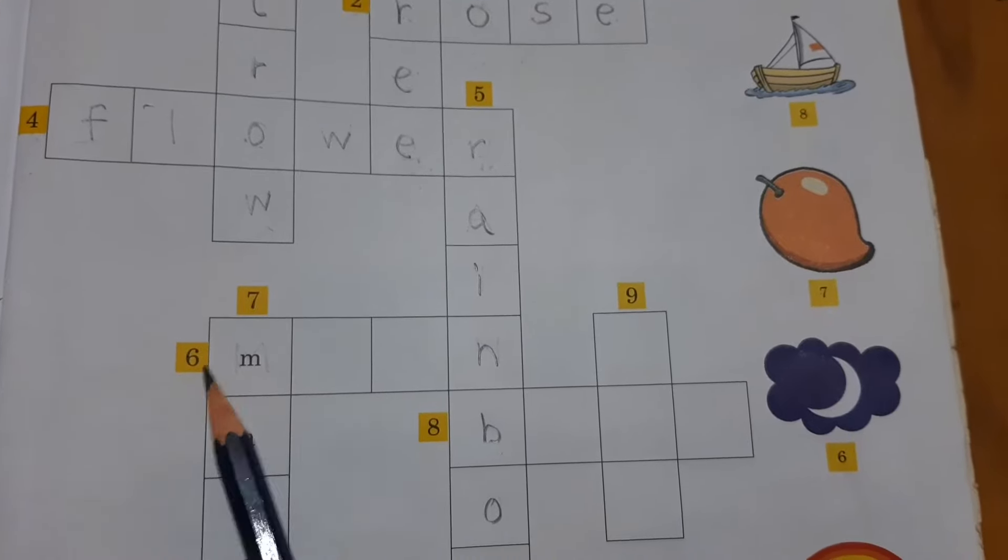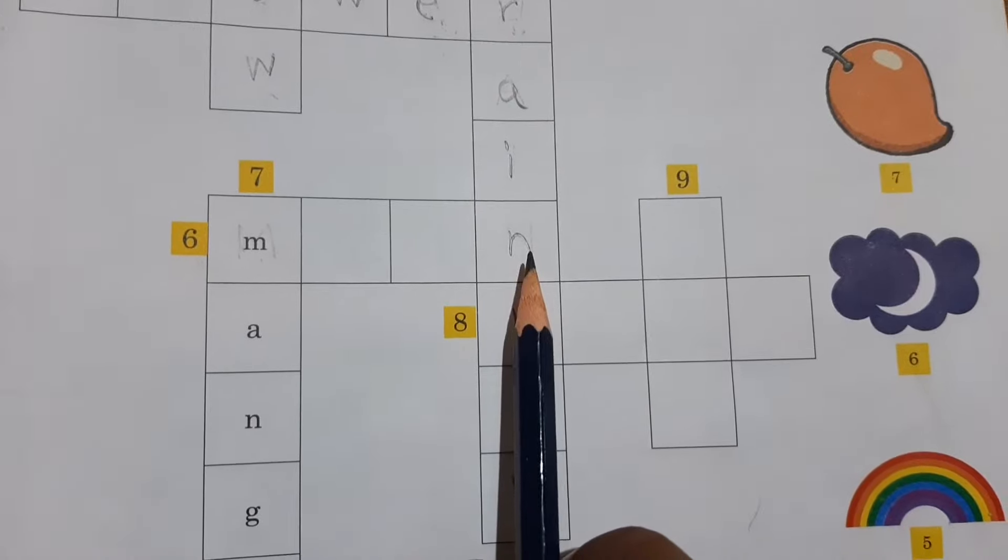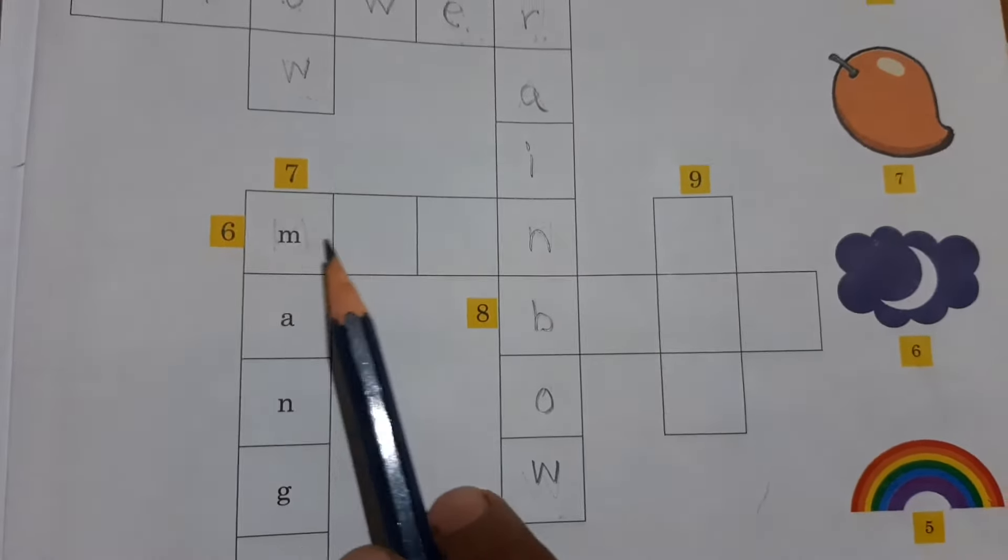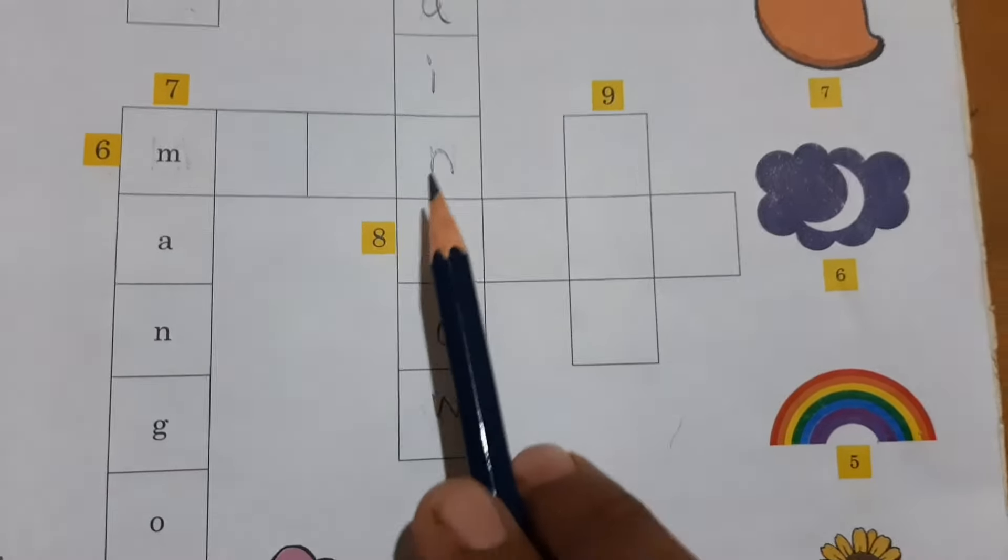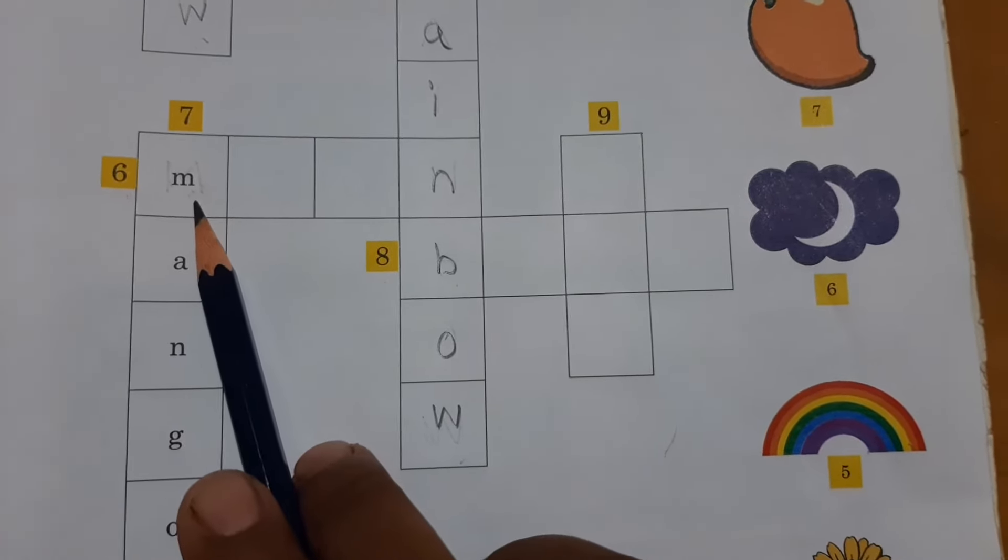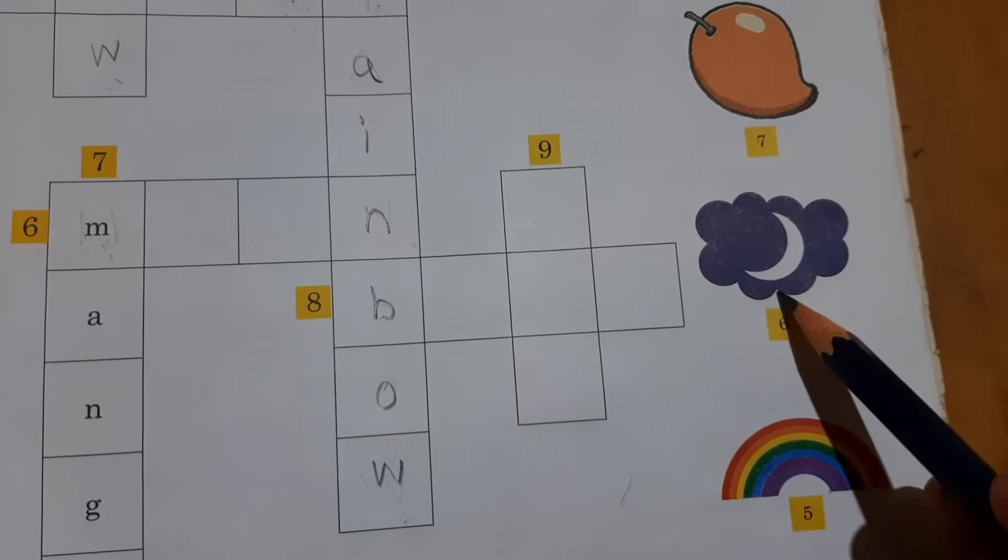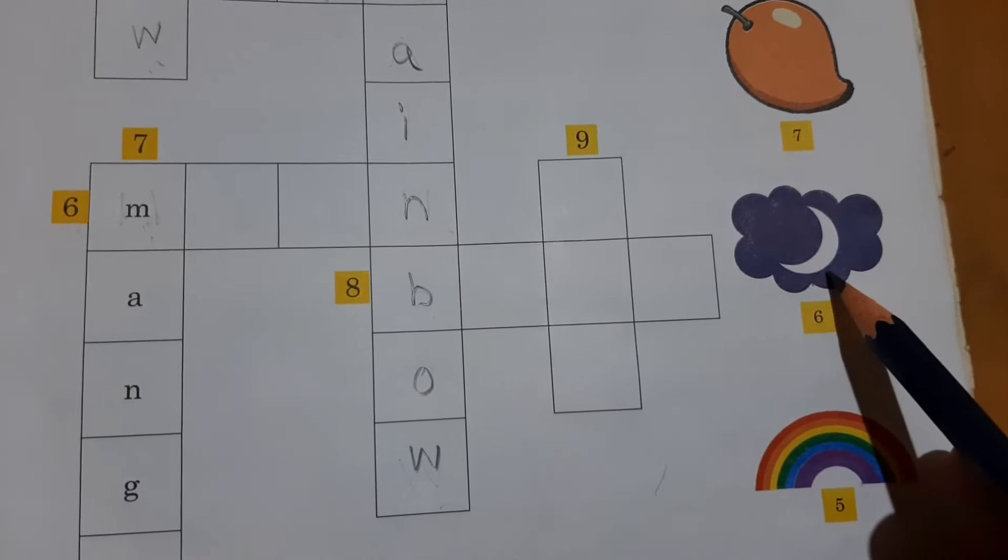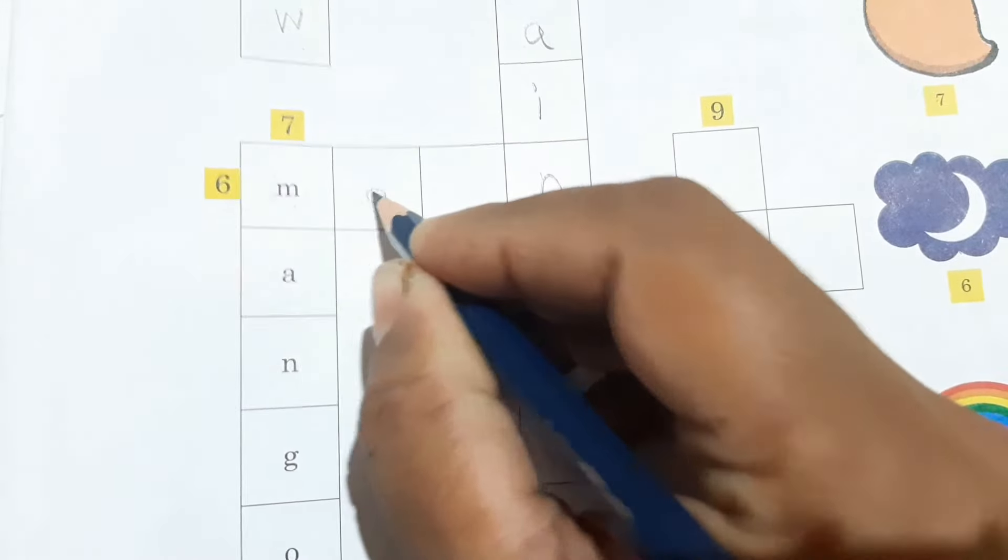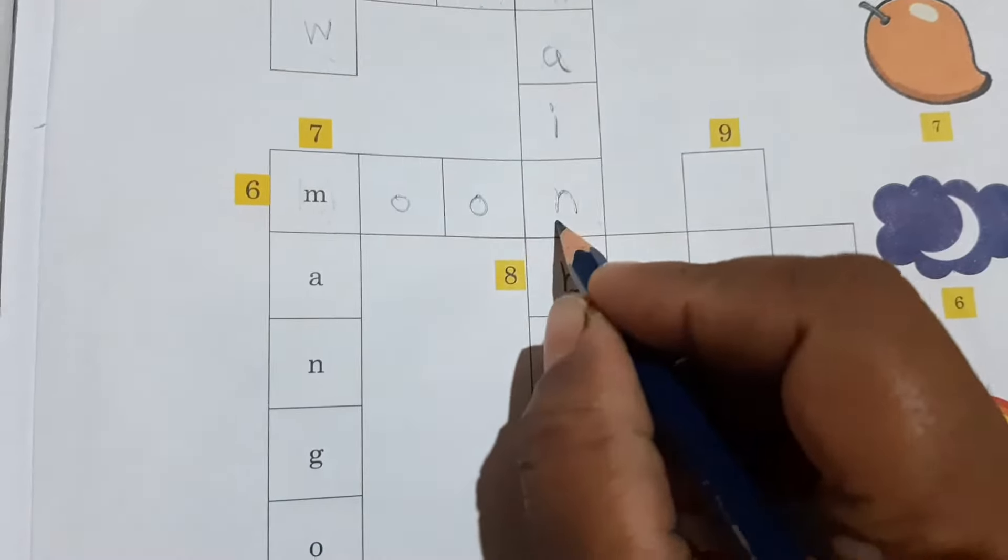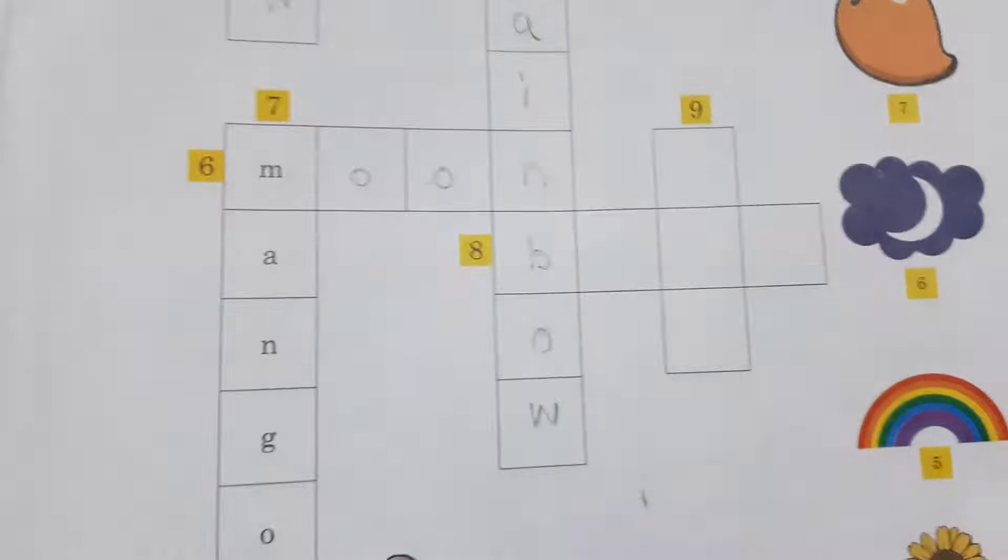Now come to number 6. Number 6 has started with letter M and finished with letter N. Which picture is there? First sound is M and last sound is N. Which picture here? Moon. What is the spelling of moon? M-O-O-N.